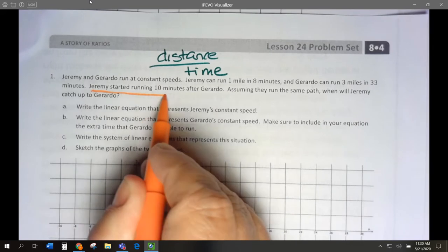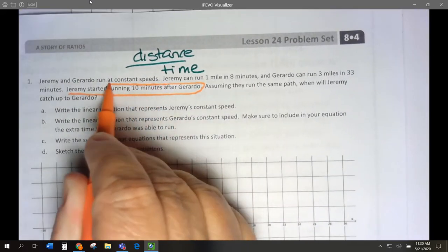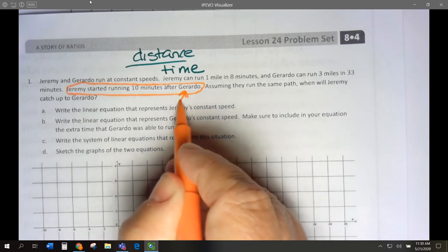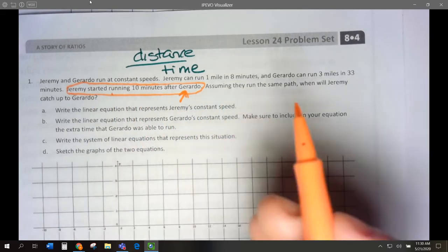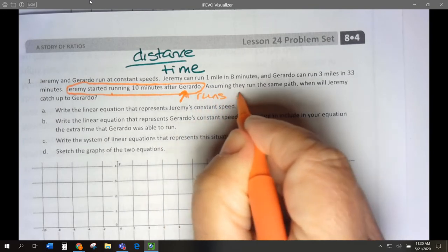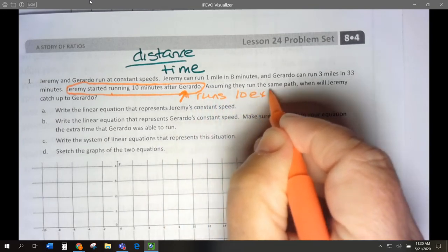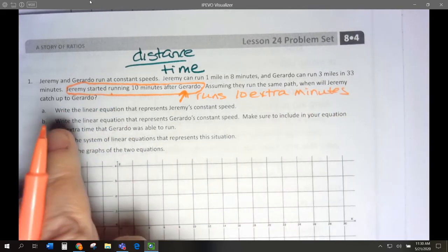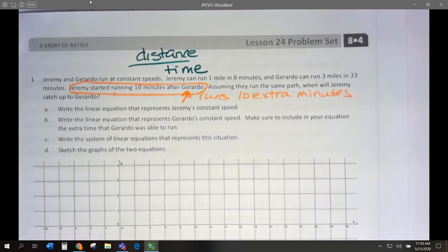So who is running first? Gerardo runs first, doesn't he? He starts running first. Jeremy starts 10 minutes later. So Gerardo runs 10 extra minutes because Jeremy started after him.